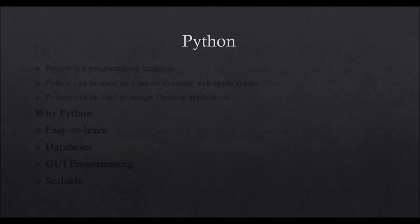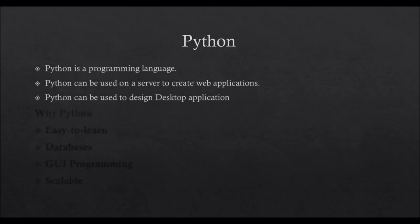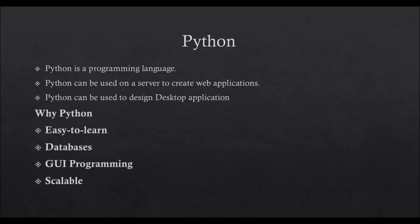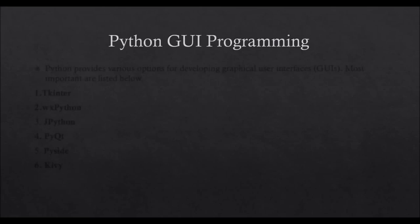So what is Python? Python is a programming language like C, C++, and Java. Python can be used on a server to create web applications, and Python can be used to design desktop applications. In this tutorial we are going to cover desktop applications in Python. Why Python? Python is easy to learn, supports databases, GUI programming, and is scalable. Not only that — using Python we can design and develop machine learning, deep learning, and artificial intelligence algorithms.